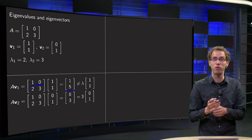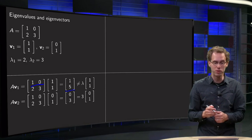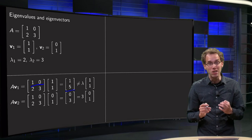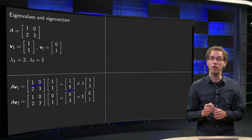[1; 1] is not a multiple of [1; 5], so there is no number in between, so that means that [1; 1] is not an eigenvector of the matrix A.